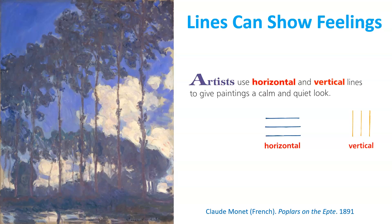Remember, vertical lines are lines that go up and down. Horizontal lines are lines that go side to side.